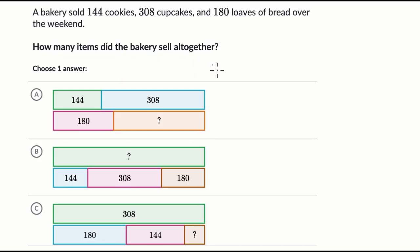So what we need to do is pick the strip diagram that would actually help us answer this question. Pause this video and think about which of these three you would pick that would actually help us answer the question of how many items did the bakery sell all together? All right, now let's work through this together.